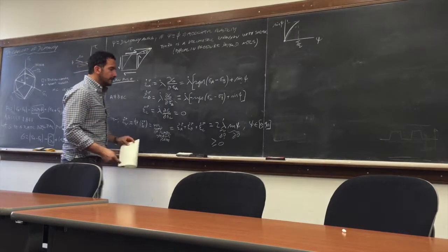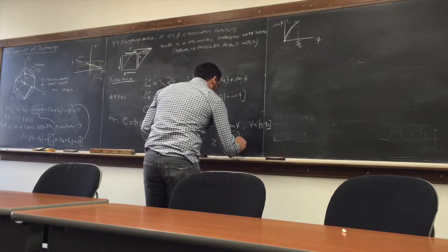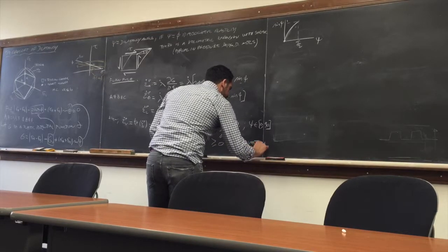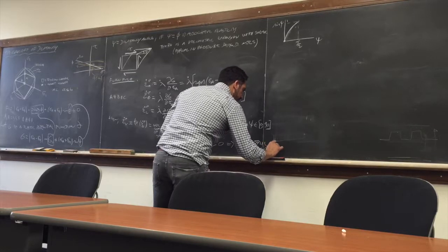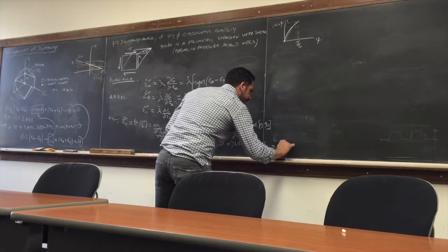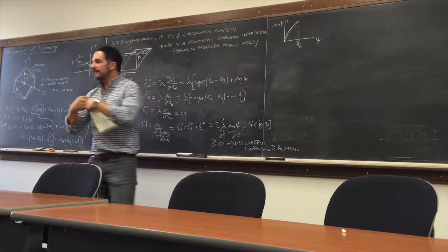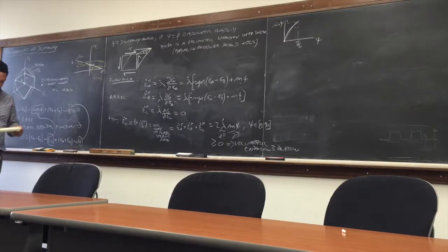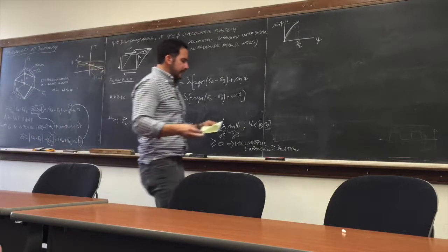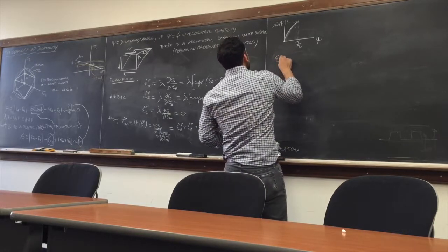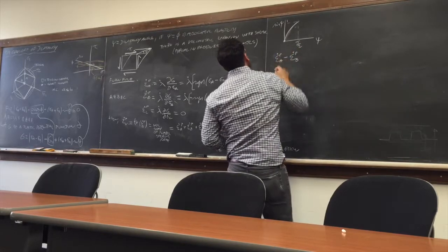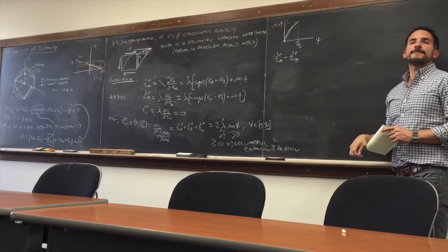This means volumetric expansion — aka dilation. That's the knuckle effect. That's all the model is picking up: you want shear, you shear, but you also expand. The other thing that will become very important is the difference between these two principal strain rates. Let's look at that. When I take the difference between ε̇ᴾ_A and ε̇ᴾ_B, the sin(ψ) terms cancel, but the sign function terms don't — they have different signs — giving me 2λ̇·sign(σ_A − σ_B).